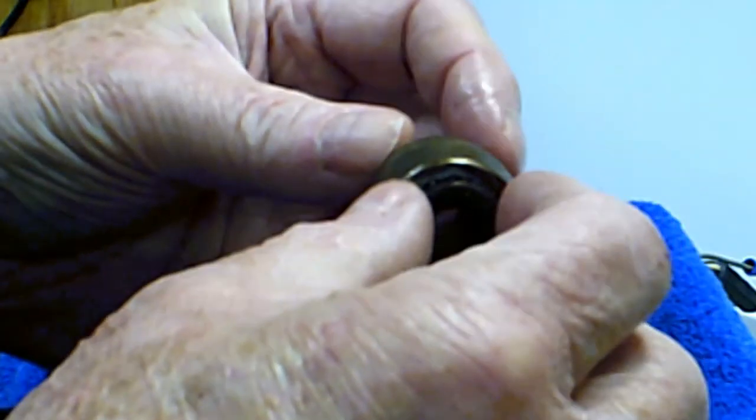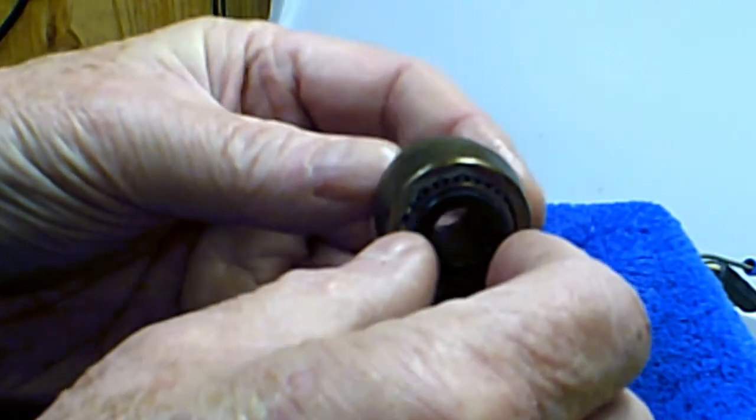But, on this 582, for some reason, they've decided they need these little spacer rings in there. So they go on each side like that. And that's one of the things that makes it really hard to get the wrist pin in there.